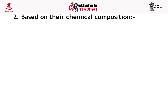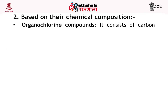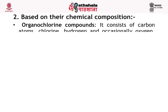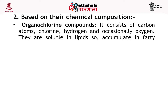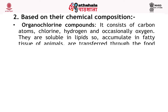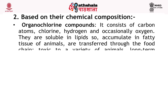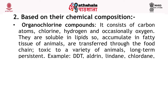Now, based on their chemical composition: organochlorine compounds consist of carbon atoms, chlorine, hydrogen and occasionally oxygen. They are soluble in lipids, so they accumulate in fatty tissues of animals and are transferred through the food chain. They are toxic to a variety of animals and are long-term persistent. Examples are DDT, aldrin, chlordane and mirex.